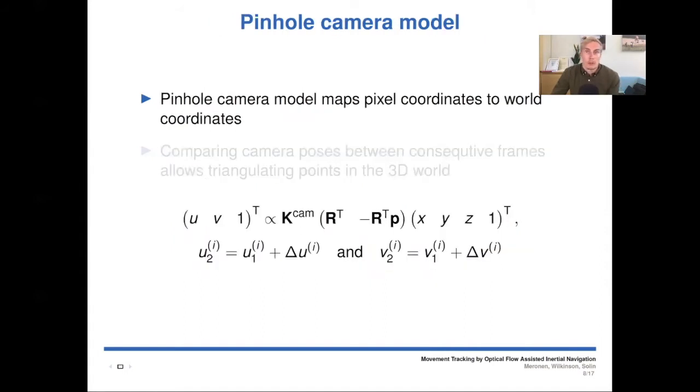We use a pinhole camera model to incorporate visual information, and the pinhole camera model maps pixel coordinates to world coordinates. And here U and V are pixel coordinates, X, Y and Z are world coordinates, K is camera intrinsic matrix, R is the rotation matrix, P is translation. And comparing camera poses between consecutive frames allows triangulating points in the 3D world.